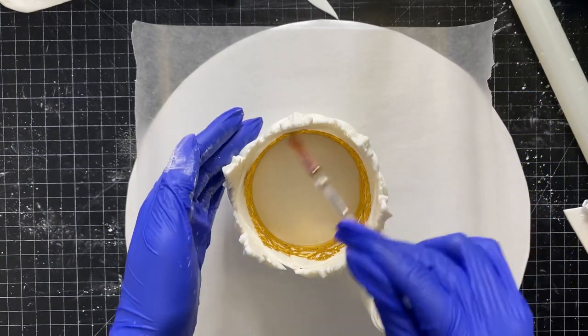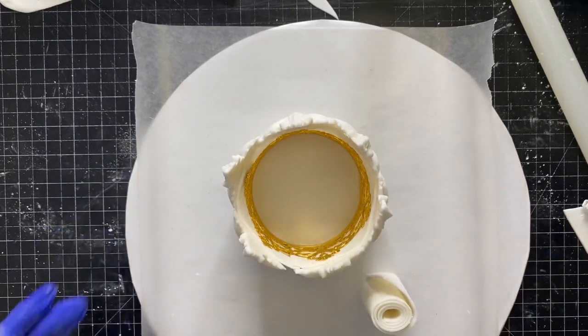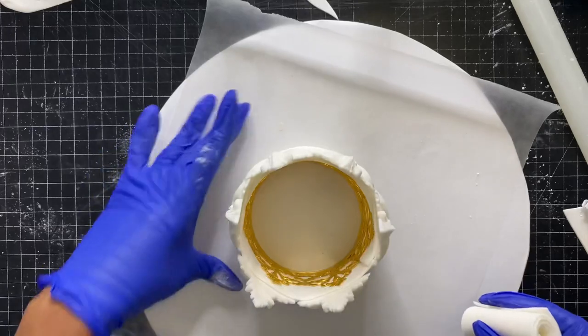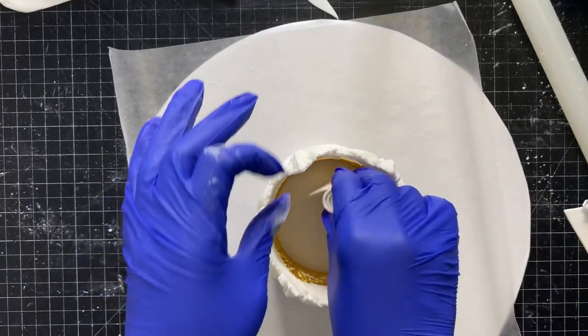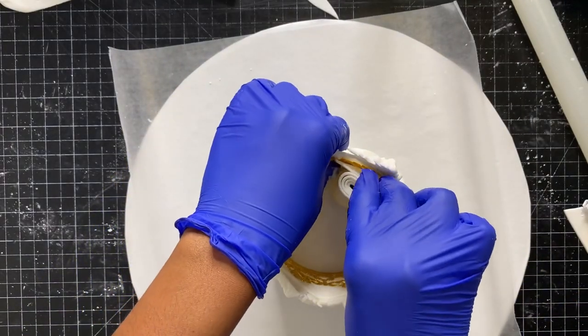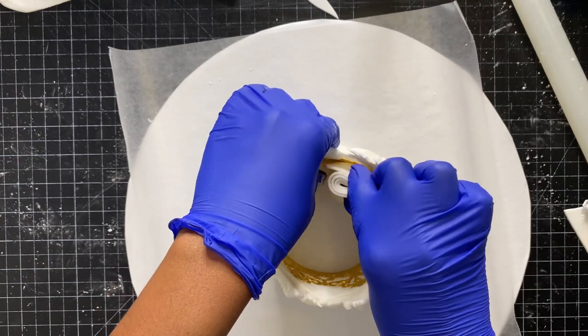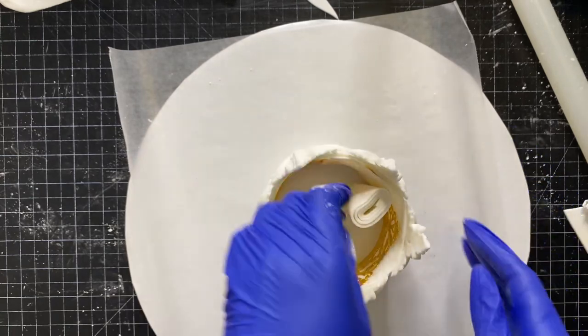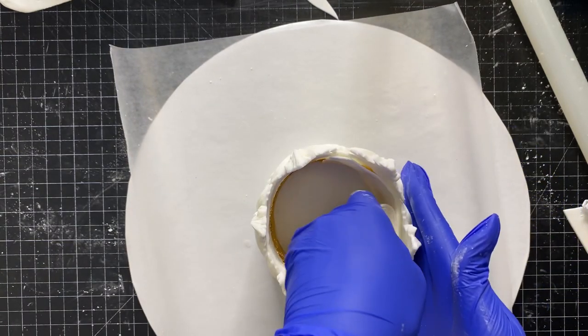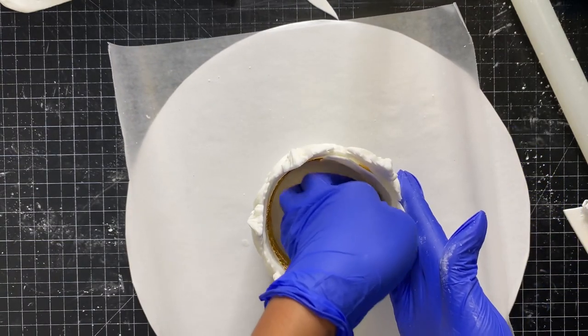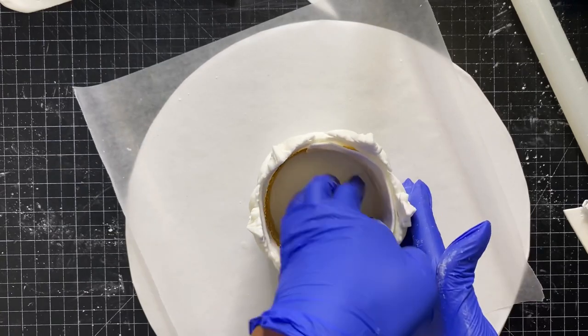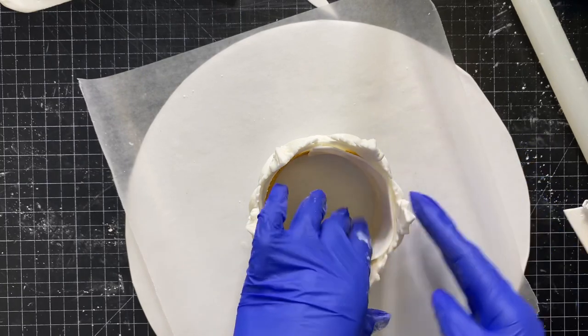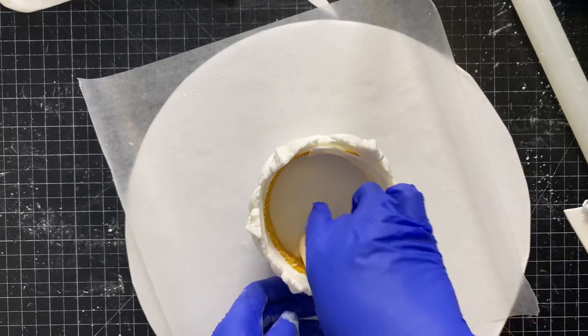I'm going to start it at the seam, line it up to where I started the first, where I started the outside strip. Then I just roll it on the inside, roll it all the way around, making sure I'm keeping everything intact.